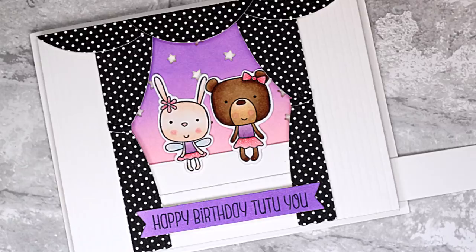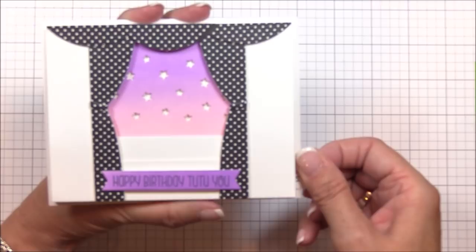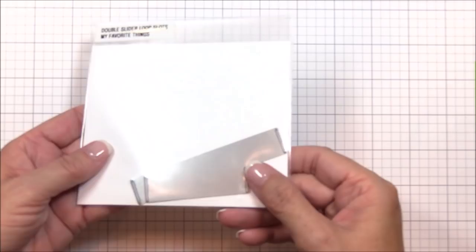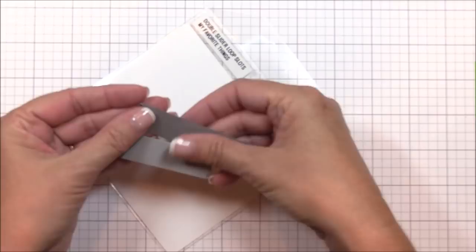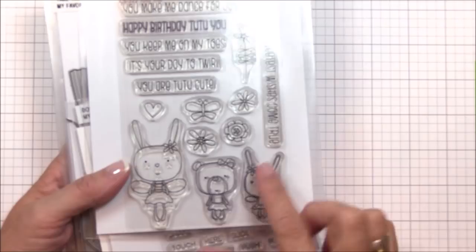I'm dropping by today to share another video tutorial for creating another fun interactive card using the new double slider loop slots dies. In the past, I've made double slider cards that featured one critter moving left to right and up and down, and it occurred to me that there had to be a way to make two critters come together at the same time. With the new double slider loop slots dies, I've managed to figure out how to do this, and I can't wait to share it with you all.